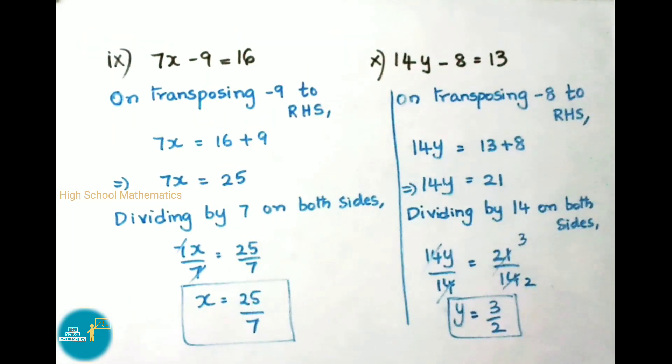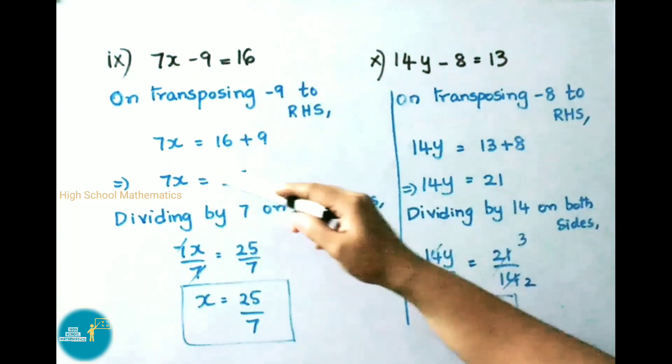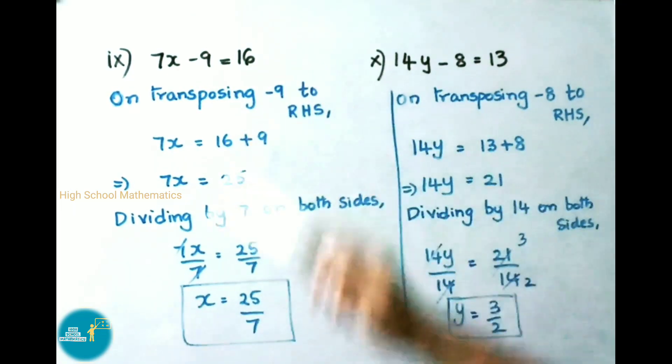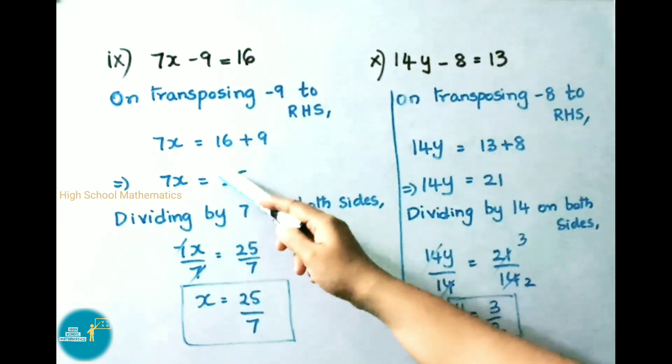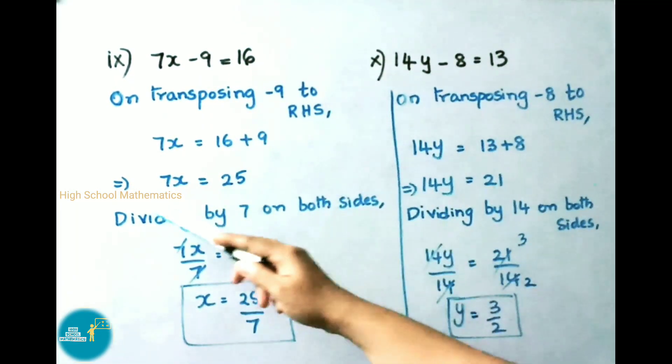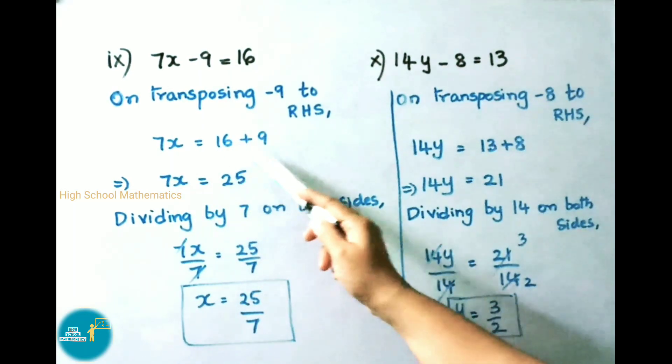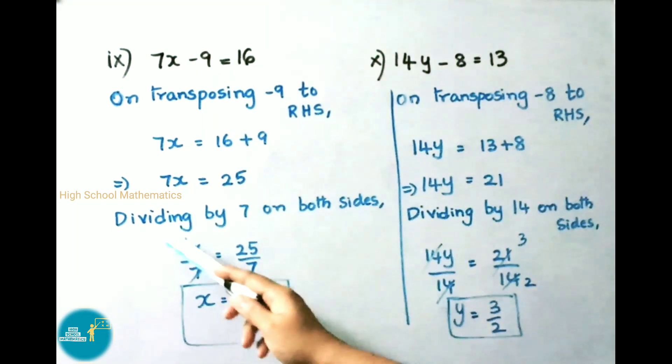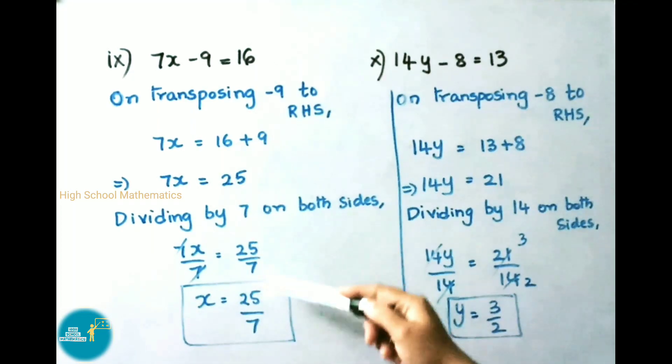Now 9th sum: 7x - 9 = 16. To remove this -9 we transpose. On transposing -9 to RHS, that is right hand side, 7x = 16. Minus 9 becomes plus 9. That implies 7x = 16 + 9 = 25. Now we remove this 7 by dividing 7 on both sides. 7x/7 = 25/7. Here 7 and 7 cancel. So x = 25/7.